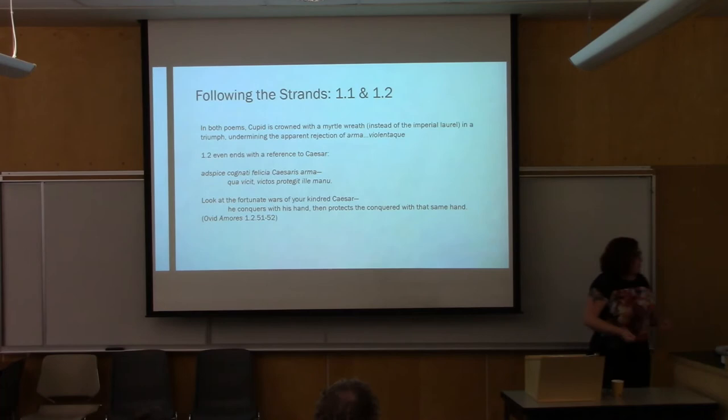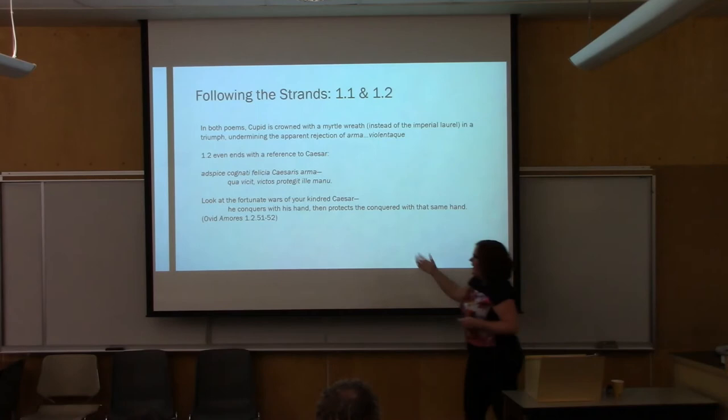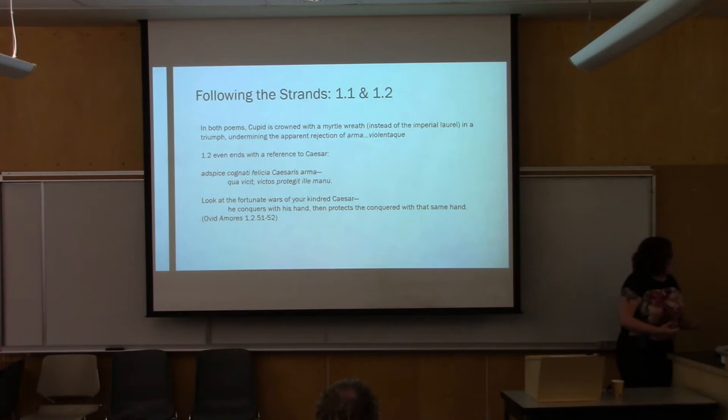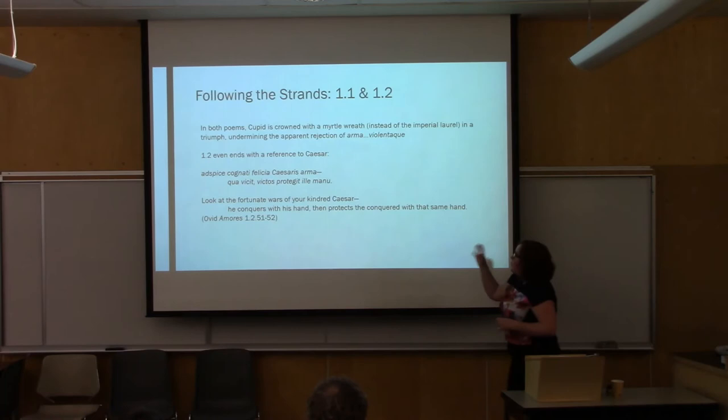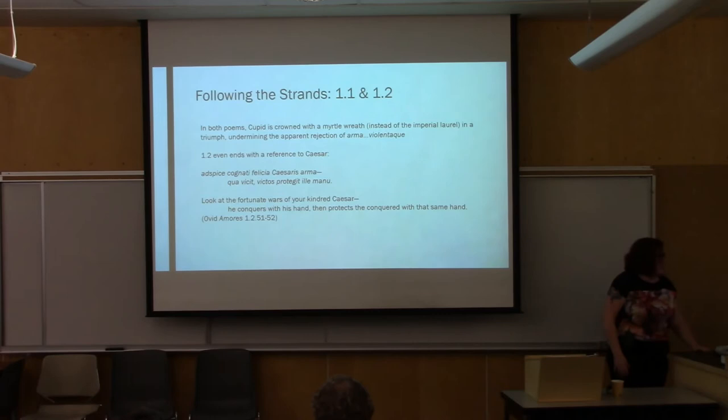The idea of militia amoris — military imagery used as a synonym for sex and love in the ancient world, specifically in elegy — is very commonly accepted. But what we find here is the direction of that violence: it's against the poet. The poet is conquered; the poet submits. Poem 1.2 ends with a reference to Julius Caesar, who supposedly shares a lineage with Cupid as a descendant of Venus: 'Look at the fortunate wars of your king and Caesar — he conquers with his hand, then protects the conquered with that same hand.' In 1.1 Ovid established this as a book about his relationship with Cupid; in 1.2 he accepts that conquest.